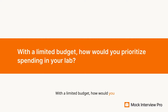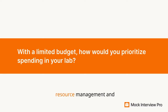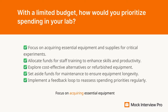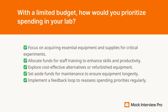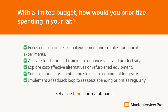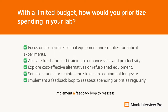With a limited budget, how would you prioritize spending in your lab? The interviewer is interested in your resource management and prioritization skills. Here's how you can approach this: Focus on acquiring essential equipment and supplies for critical experiments. Allocate funds for staff training to enhance skills and productivity. Explore cost-effective alternatives or refurbished equipment. Set aside funds for maintenance to ensure equipment longevity. Implement a feedback loop to reassess spending priorities regularly.